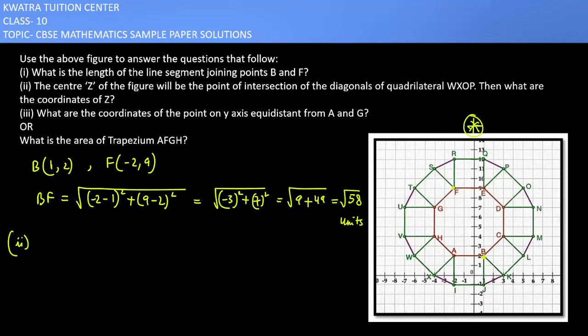The first thing we need to see is where W and X are. This is W, and this is X. O and P are identified on the figure. We need to join them. WXOP is a rectangle, and for a rectangle, the diagonals intersect each other. We need to find the center Z where the diagonals meet.